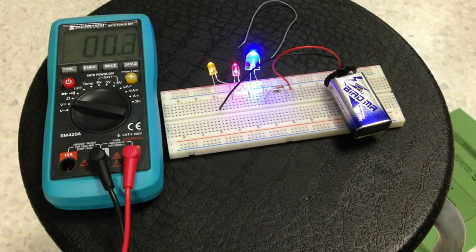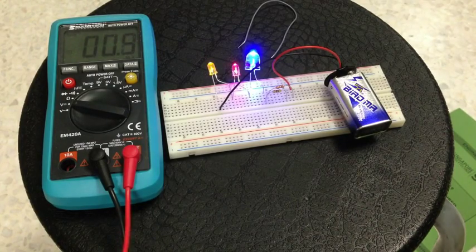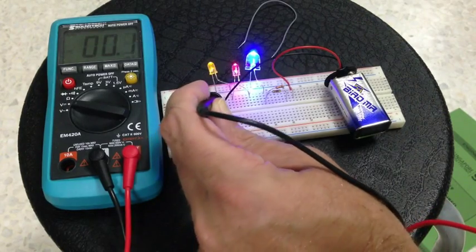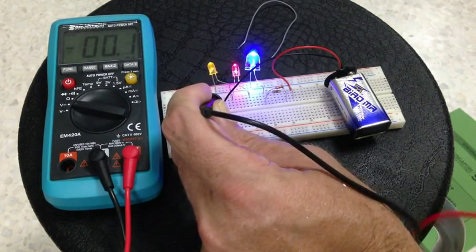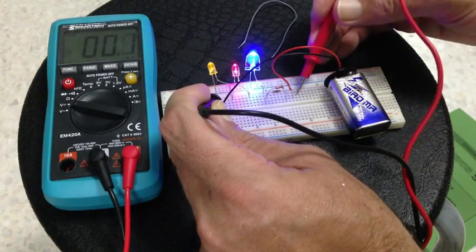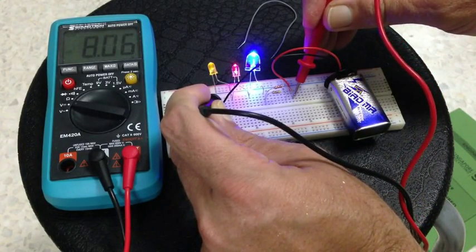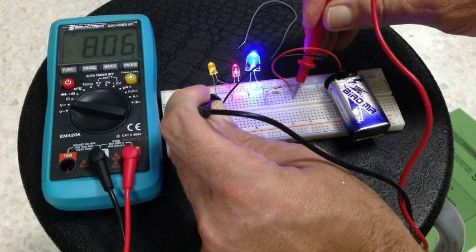So, first of all, we put the black probe on the black side. We can just dig it into where the wire goes into the breadboard. We just go to the other side and we see it's 8.06 volts. This is not the best battery in the world.